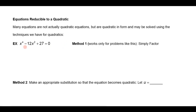For example, this first one right here looks quadratic in the sense that it's a trinomial and there's a certain symmetry about it. And one way that works especially for problems like this is to just factor it. You could go ahead and factor this as x squared and x squared to get x to the 4th. The factors of 27 that would give you 12 in the middle would be 9 and 3, and they both have to be minus there.